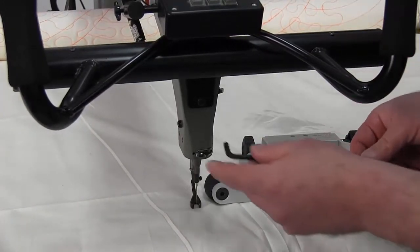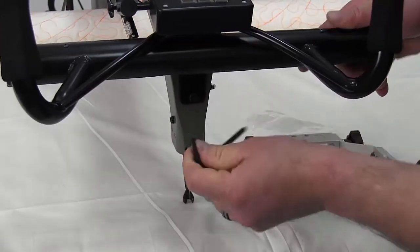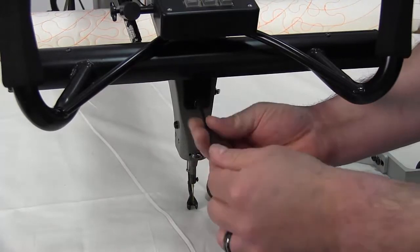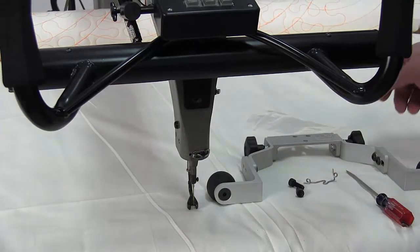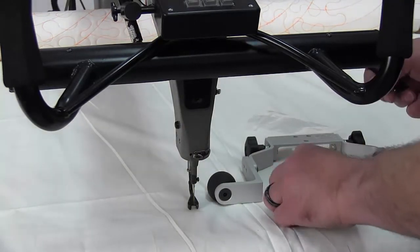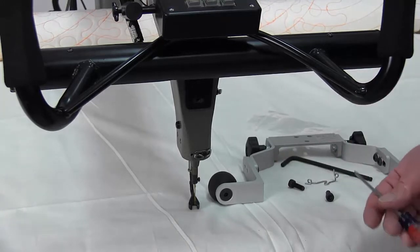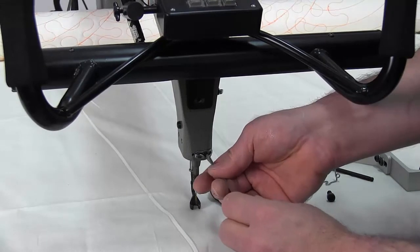And the allen wrench that comes with it. We want to remove this screw and set it aside. You're going to need to replace it with a longer screw. Before we put those in, we want to take this thread guide off.